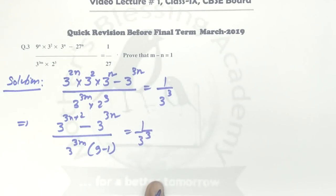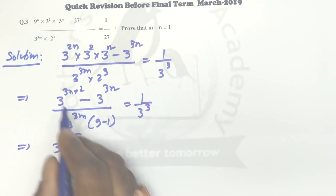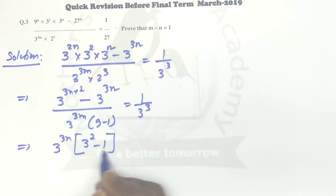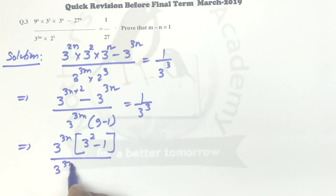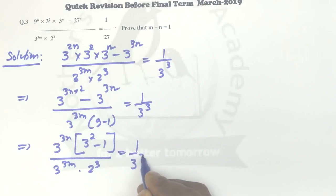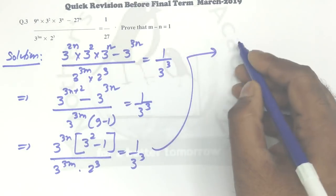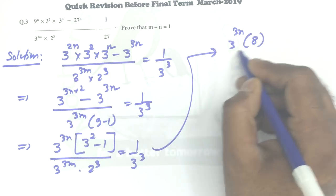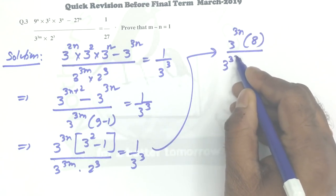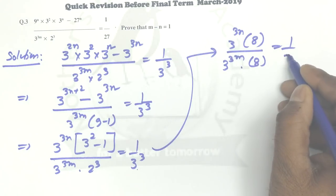Taking 3 to the power 3n as common from the numerator gives 3 to the power 3n times (3² minus 1), which is 3 to the power 3n times 8. The denominator is 3 to the power 3m times 2³. Now 2³ equals 8, and 9 minus 1 is also 8, so the 8s cancel. We are left with 3 to the power 3n over 3 to the power 3m, equal to 1 over 3³, which is 1 over 27.